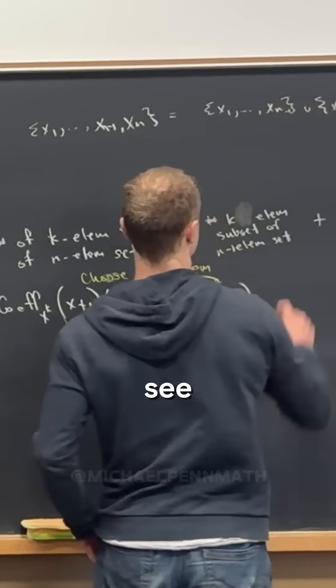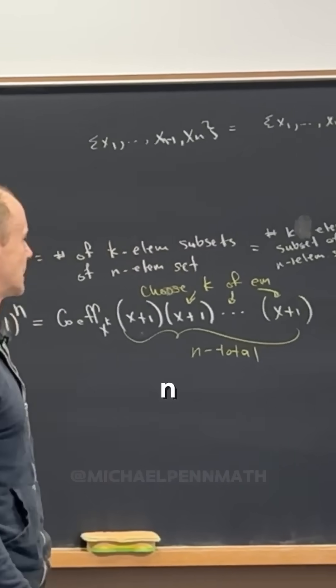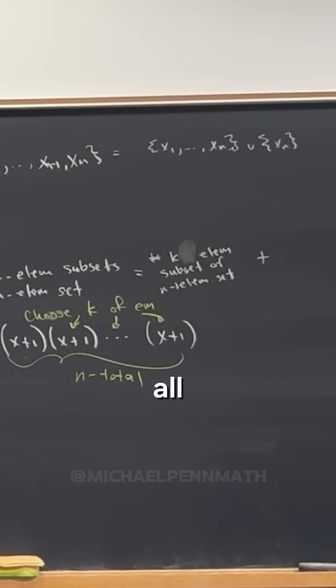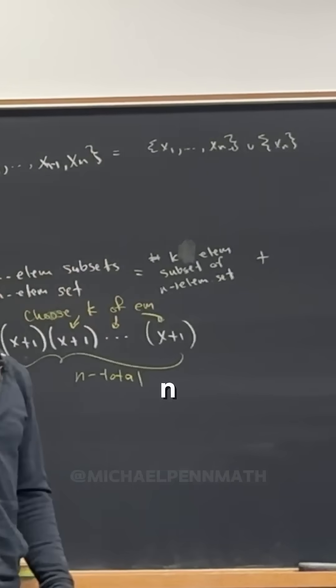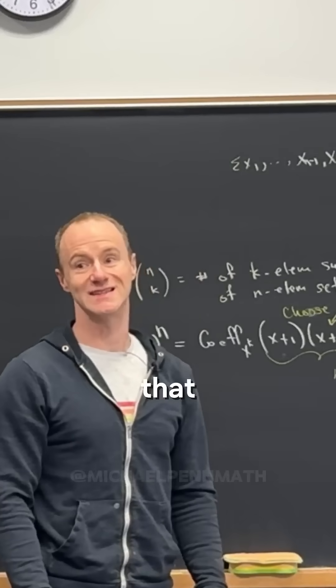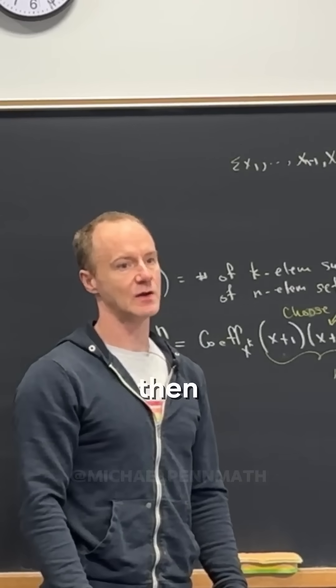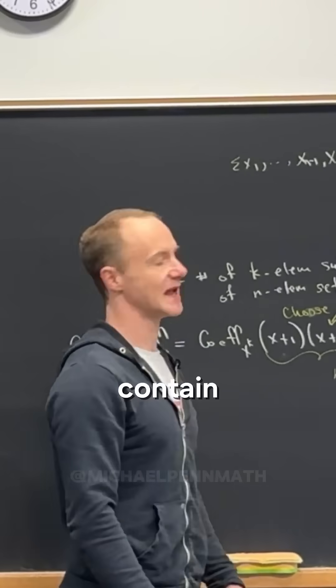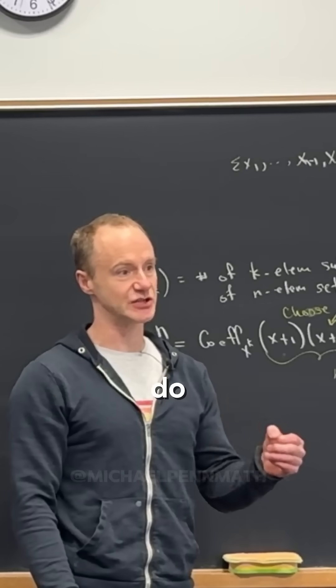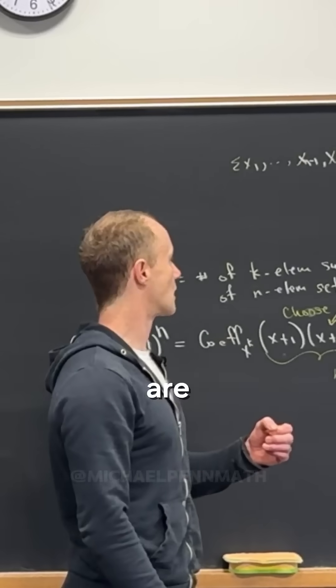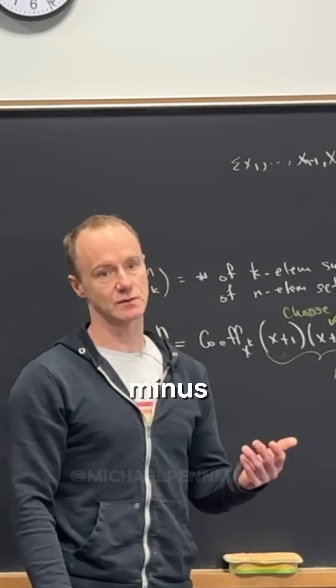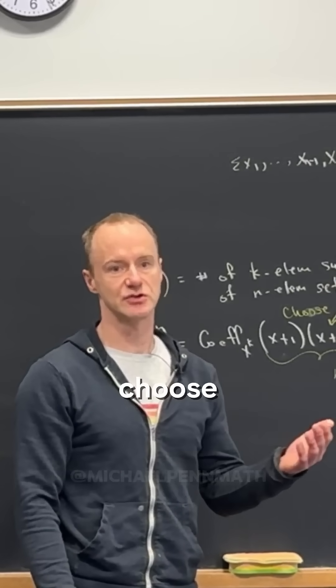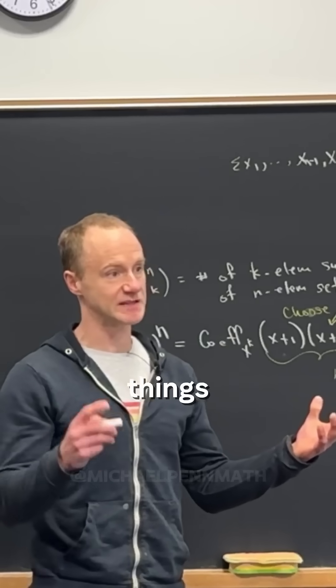Union xn. So let's see. Number of k element subsets of an n minus one element set - these are going to be all the subsets that don't contain xn. All the ones that don't contain xn. And then we want all the ones that do contain xn.